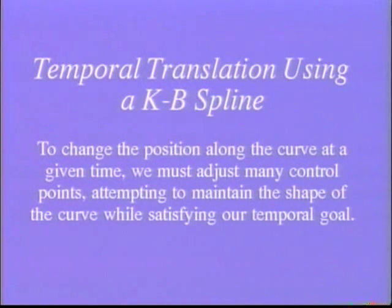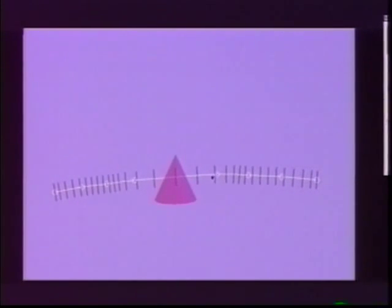This second example shows an animator attempting to change the timing of a KB curve without affecting the shape. As you see, the animator must edit many control points, and the final shape is only an approximation to the original shape of the curve.